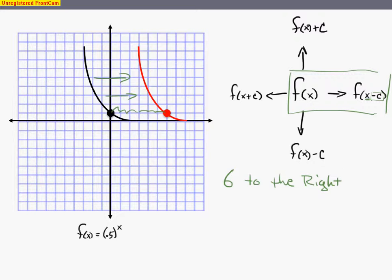So if I want to take my original equation, which again is my f of x is 0.5 to the x power. But I have to have my translation happening and that is a negative. So I'm going to go ahead and say negative 6.